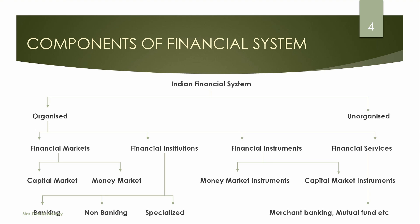Under Financial Markets, the first is Capital Market and Money Market. The Capital Market is divided into Primary and Secondary. The Money Market includes Call Money Market, Commercial Bill Market and Treasury Bills. Financial Institutions include Banking Institutions, Non-Banking Institutions, and Specialized Financial Institutions.